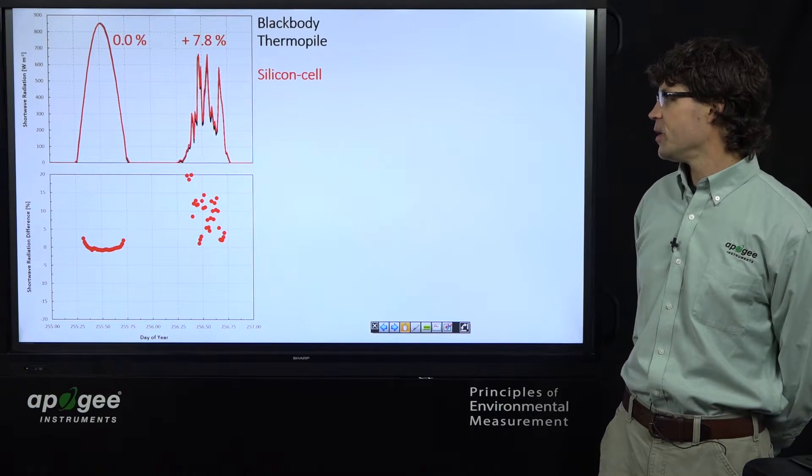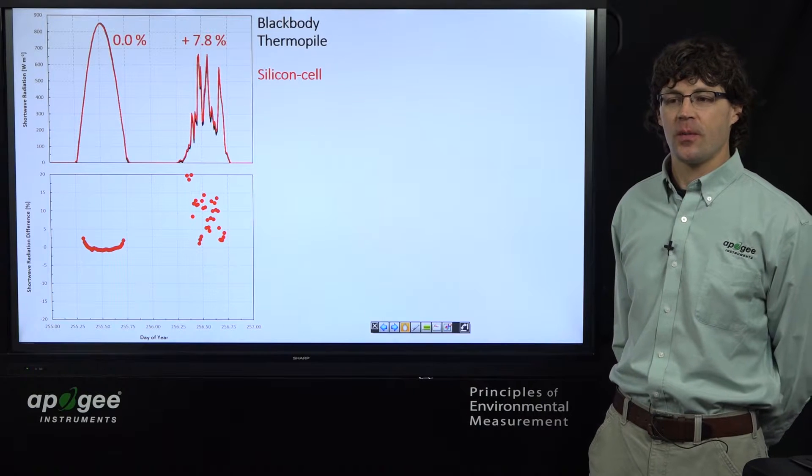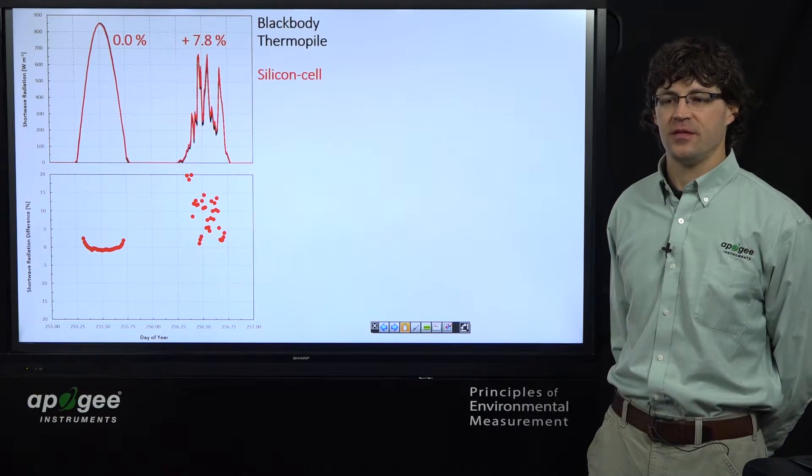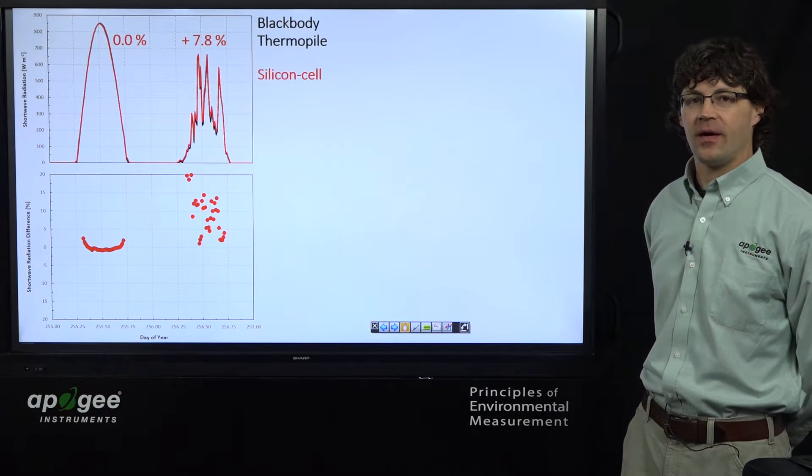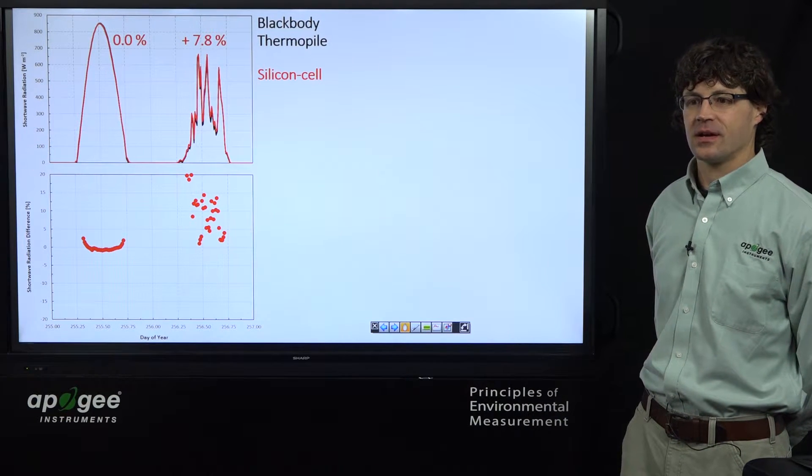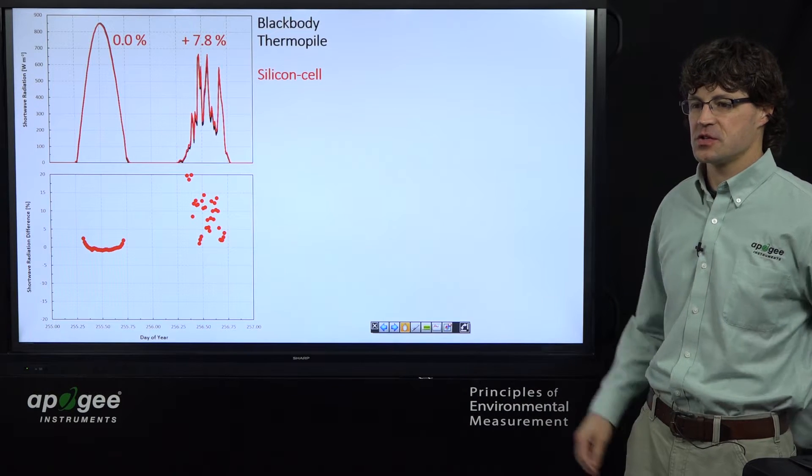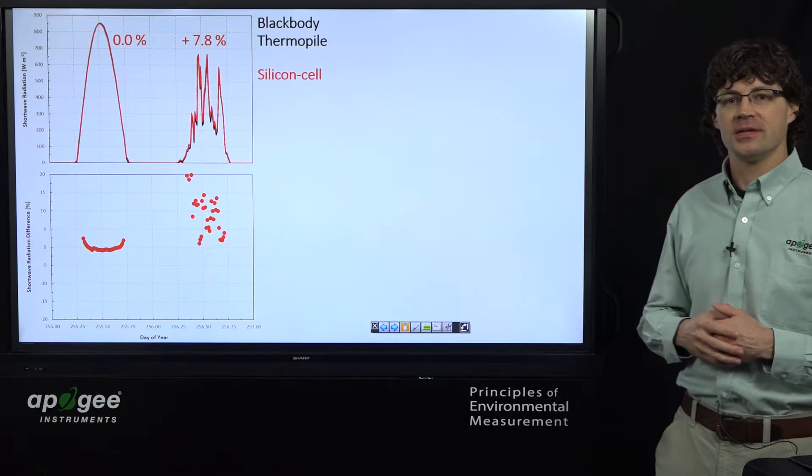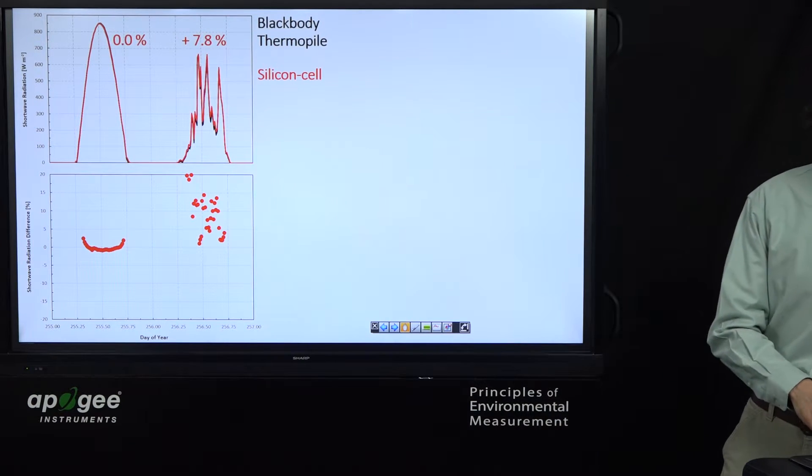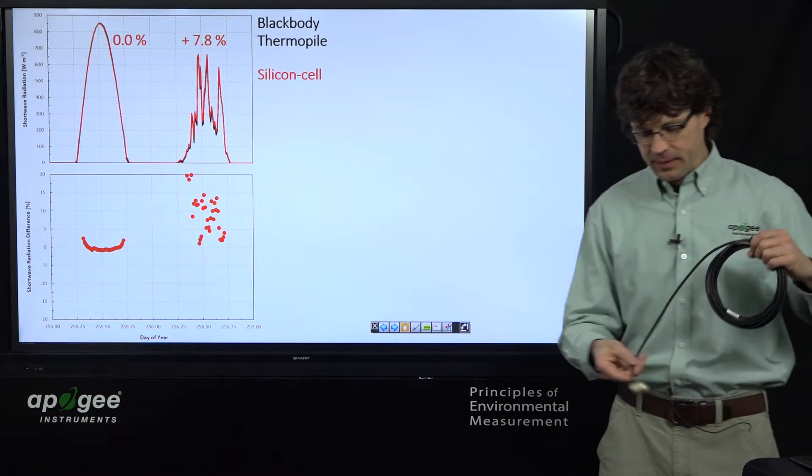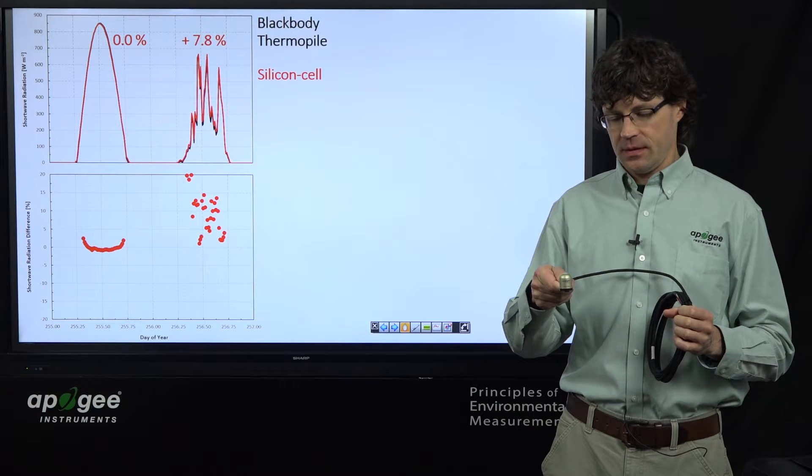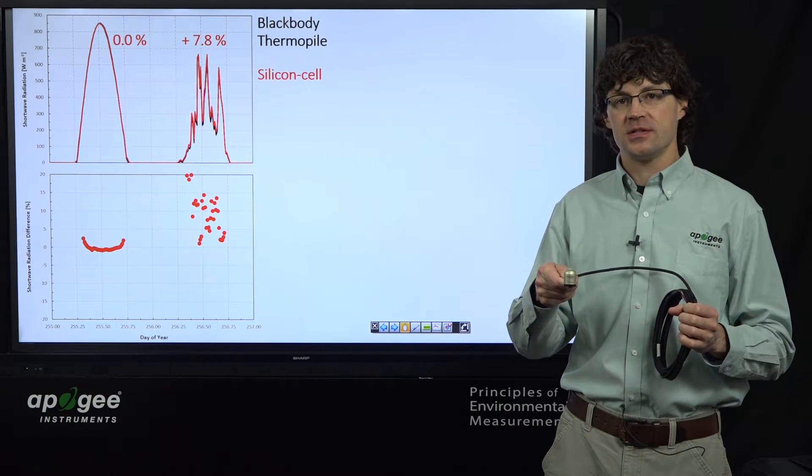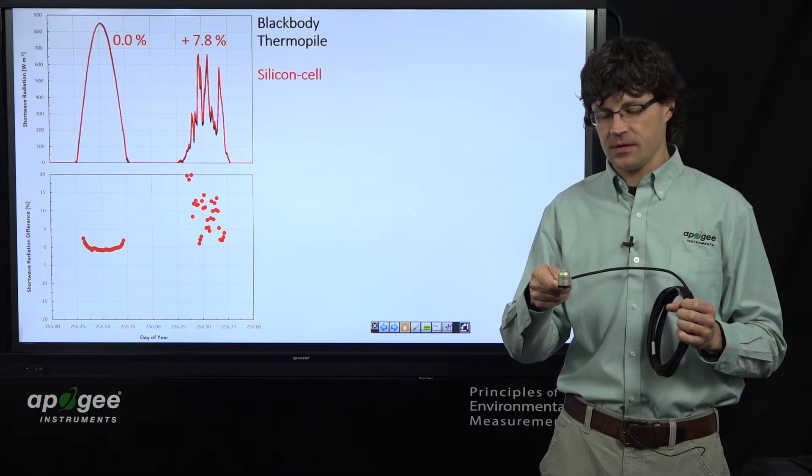So at Apogee we've often tried to maximize performance and minimize price. So our real goal in building the new thermopile pyranometer, the SP510, was to make something that improved upon these cloudy or overcast sky errors with silicon-cell sensors, but still kept the price similar to silicon-cell. And I have one here to display. You can see it's small, compact, and similarly shaped to the standard Apogee silicon-cell sensor.